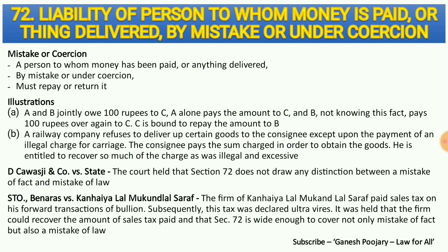The two important aspects under section 72 are mistake and coercion. Regarding coercion, we covered it in detail when discussing free consent. Regarding mistake — normally we treat mistake of fact and mistake of law differently under different laws. But under section 72, both mistake of fact and mistake of law are treated simply as mistake. This was held in both Kausti v State and Banaras v Kanayalal — a mistake is a mistake as far as section 72 is concerned, and a quasi-contract will be created.